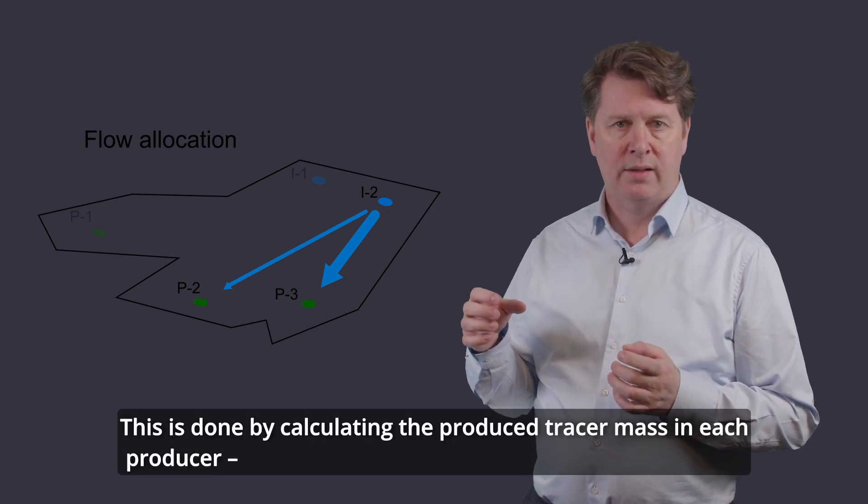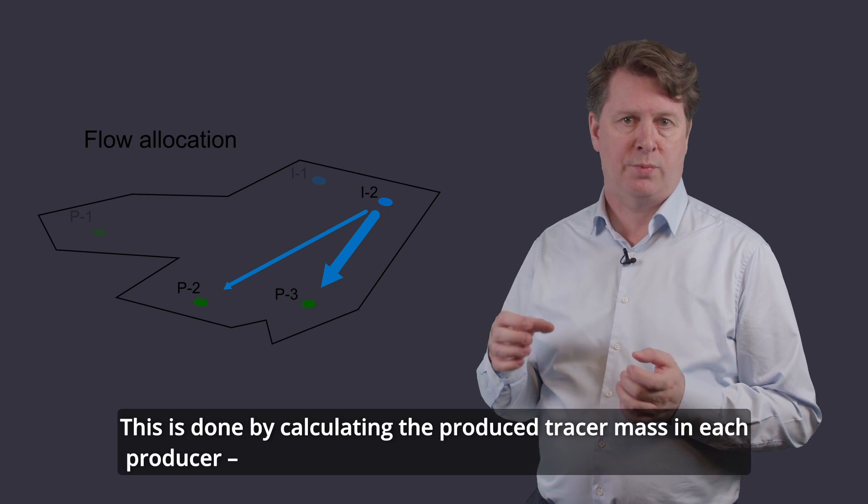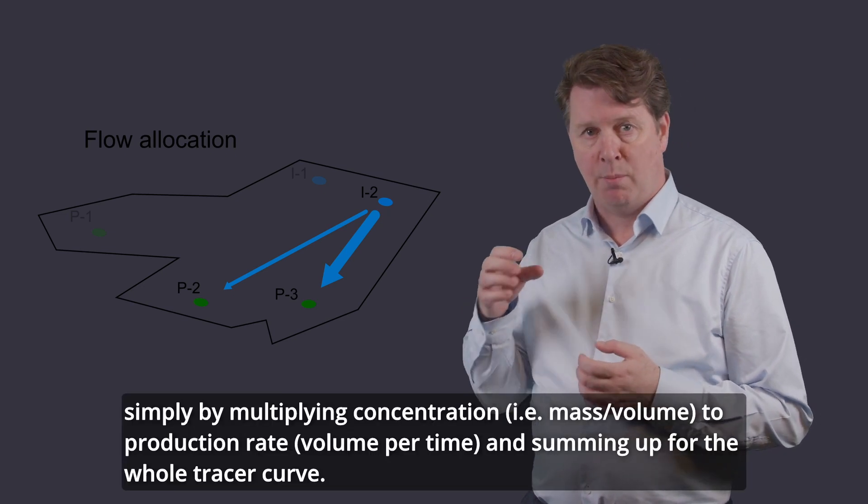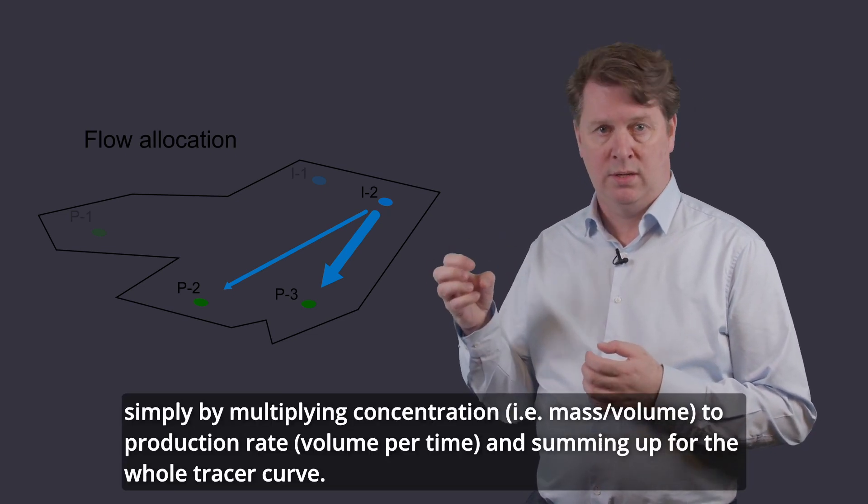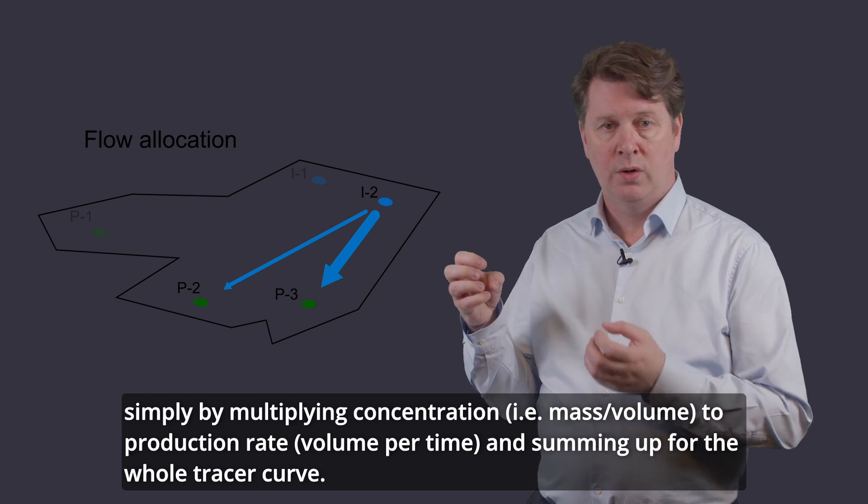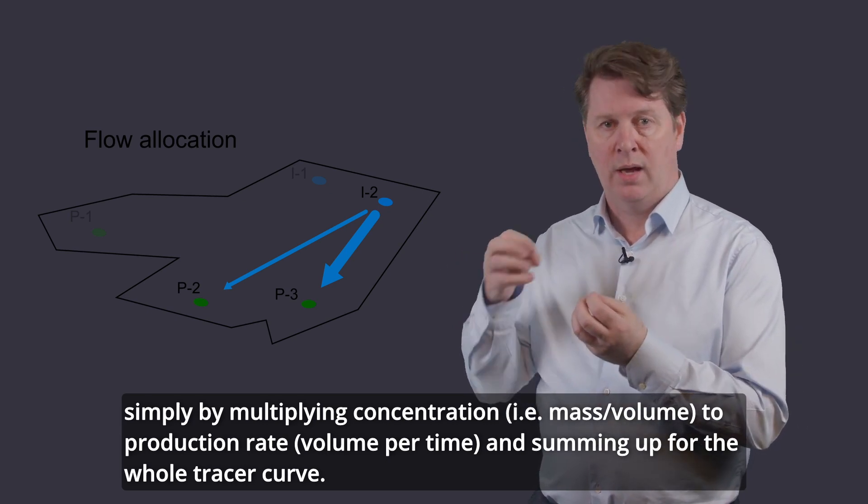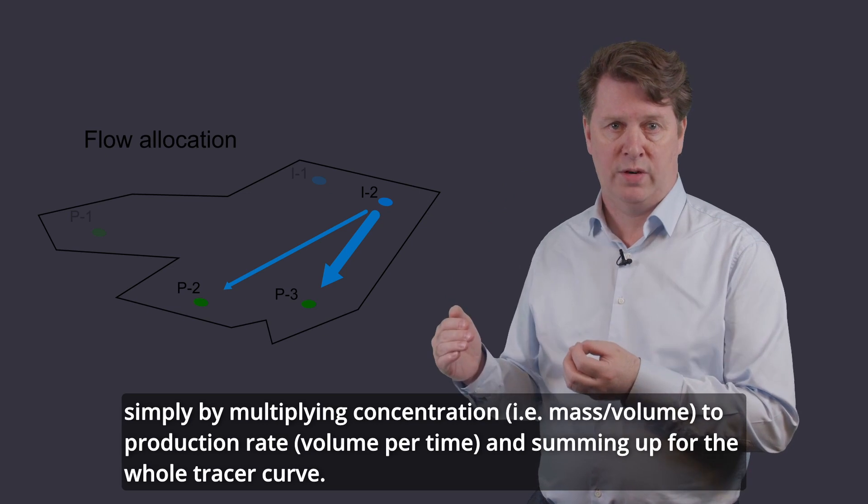This is done by calculating the produced tracer mass in each producer simply by multiplying the concentration, that is the mass per volume, to the production rate, volume per time, and summing up for the whole tracer curves.